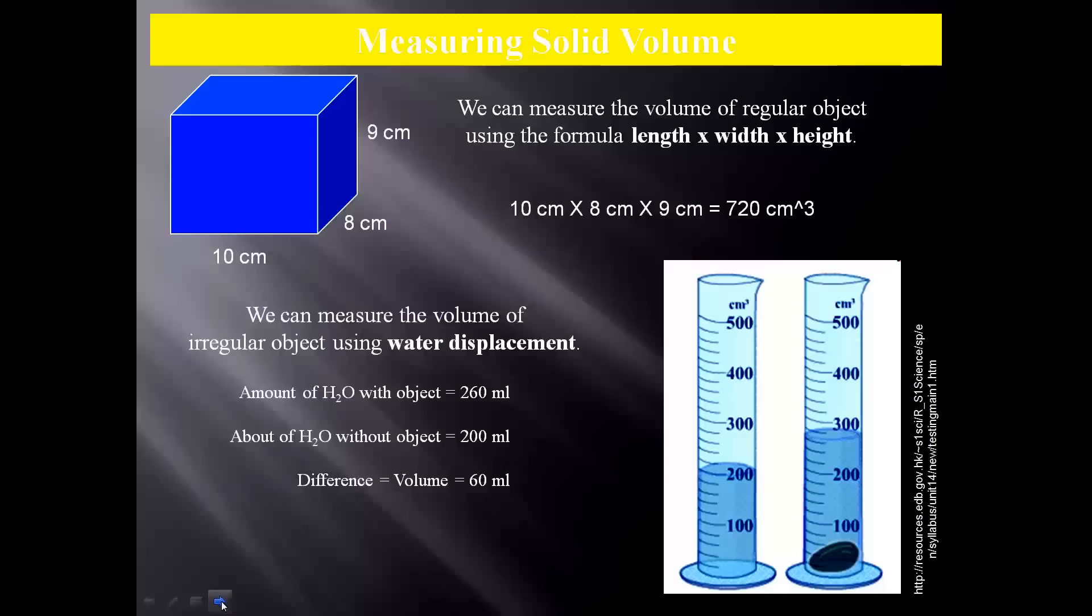An interesting way to find the volume of something that's an irregularly shaped object, like a rock or a stone, you can use water displacement. If you've ever taken a bath, and as you sit into the tub, the water level in the tub rises. That is the displacement. You can actually measure the volume of an irregularly shaped object in a graduated cylinder.